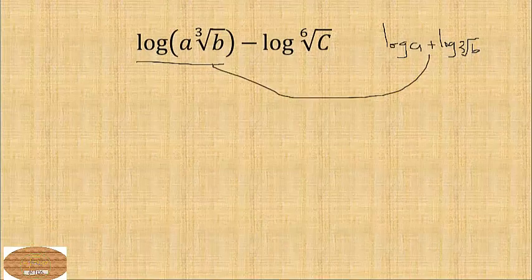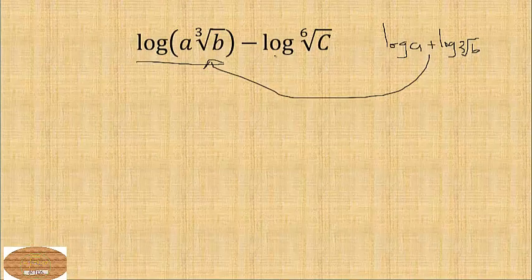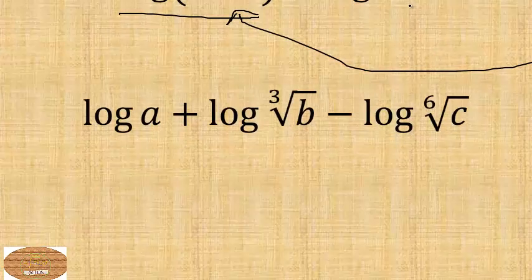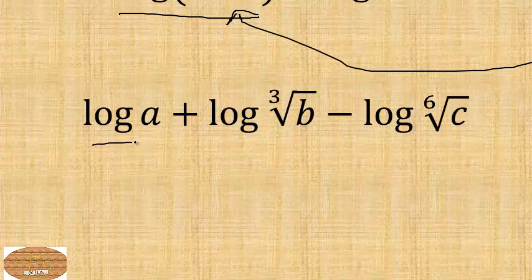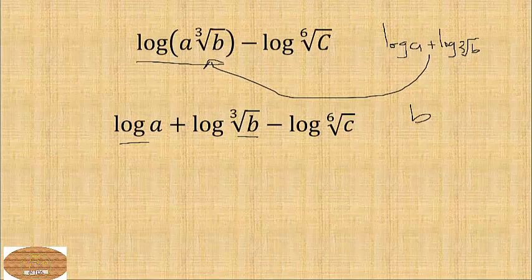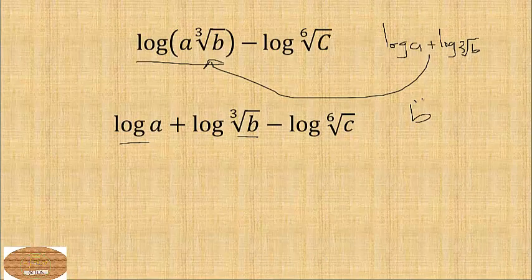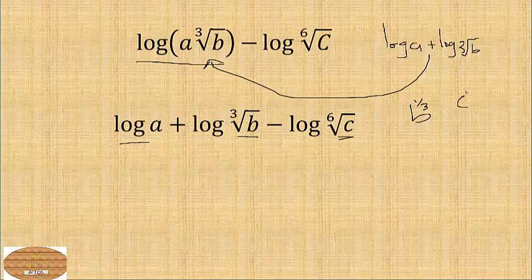So this one is the same as... that's nicely done. So we have log b here and this one the same as b to the power 1 over 3, and this one the same as c to the power 1 over 6. So we are going to write this one as this and this one as that.